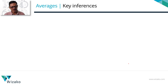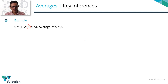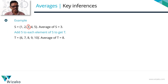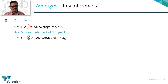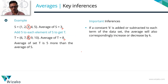Now let's get around to the inference. Look at set S — it has 5 elements: 1, 2, 3, 4, 5. These numbers are all in an arithmetic progression, so the middle number is the average: average of S equals 3. Now obtain set T by adding 5 to each element in set S, giving T = {6, 7, 8, 9, 10}. This is also an AP, and the middle number gives average = 8. We added 5 to each element, and the average is also 5 more. That's inference number 1: if a constant K is added or subtracted from each element of a data set, the average also goes up by K or comes down by K.